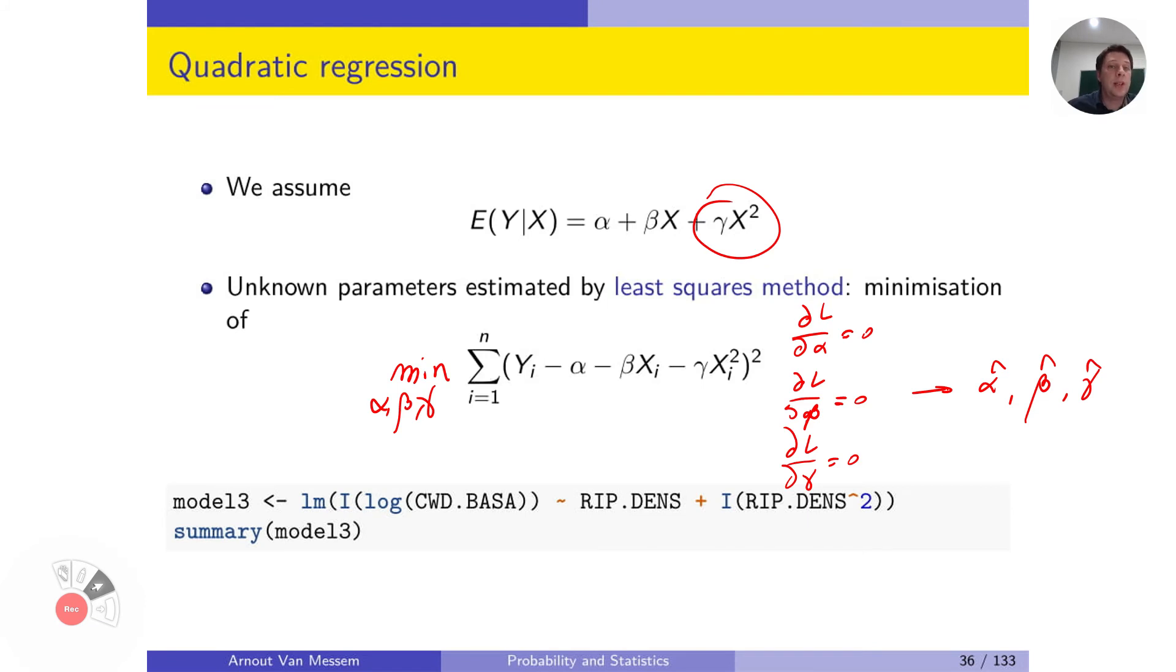We will not look into the details of these formulations, but you can do it yourself if you like. If we then go back to the model, to the example that we were working on, we create a third model, which explains the logarithm of my basal area in function of the density and the squared density.